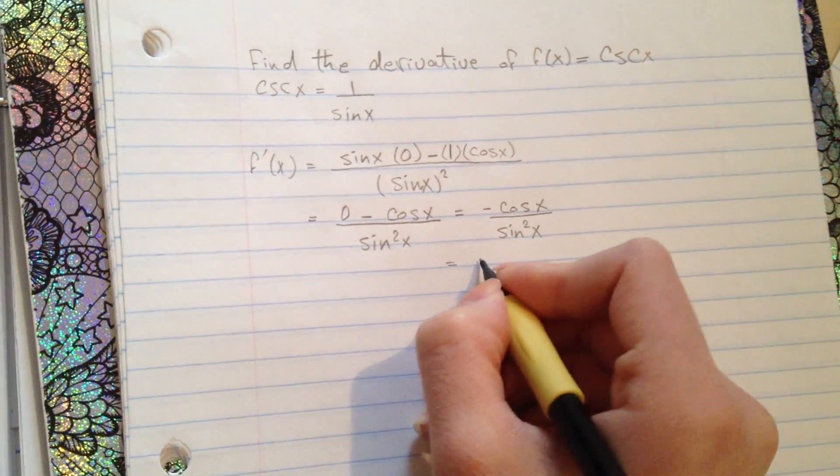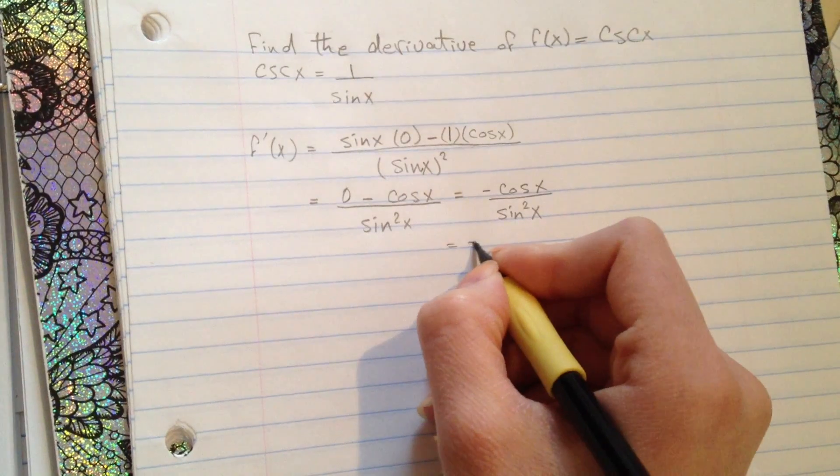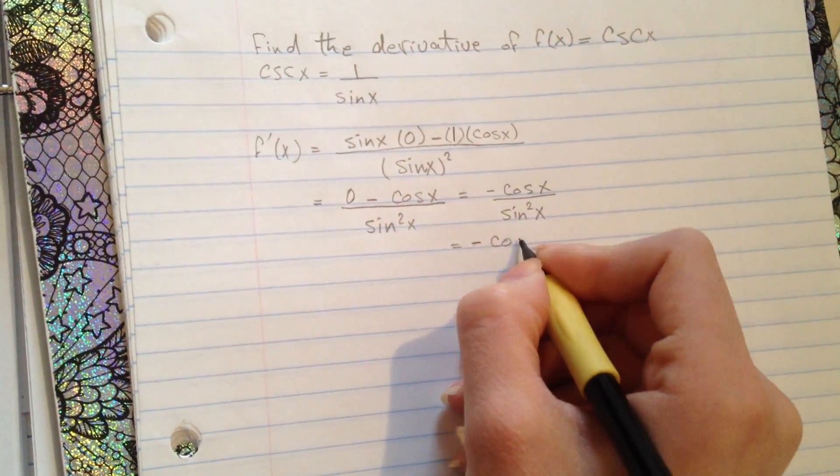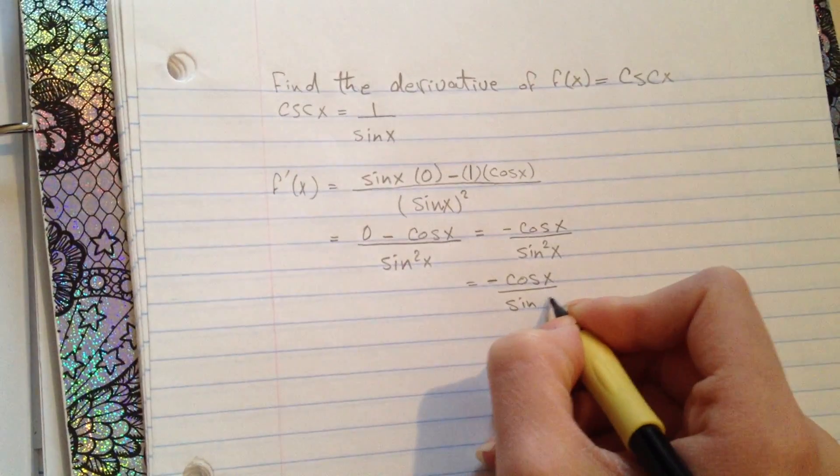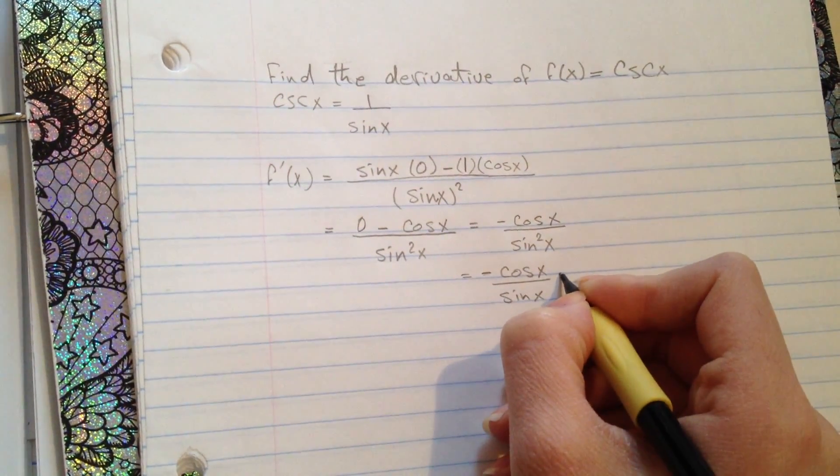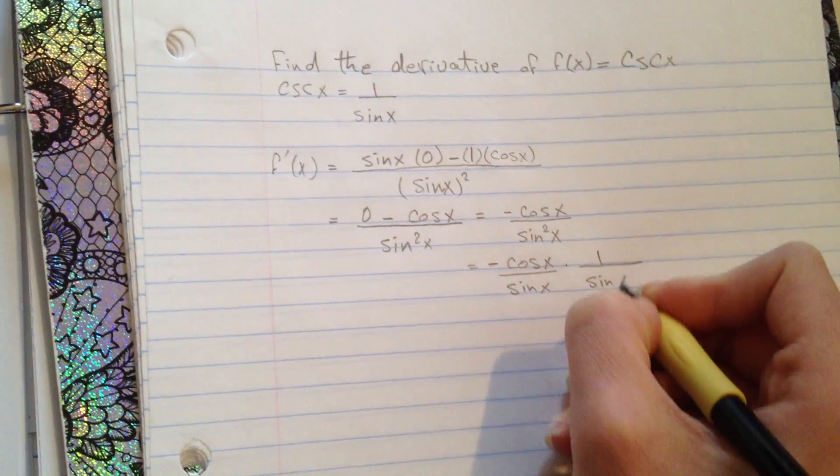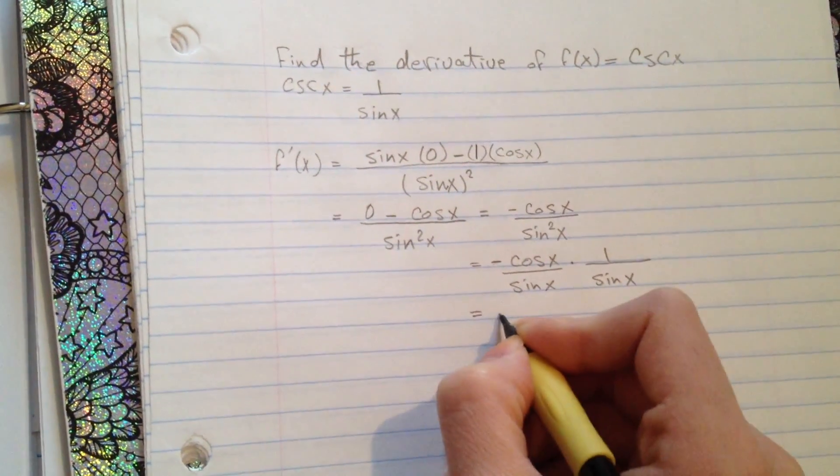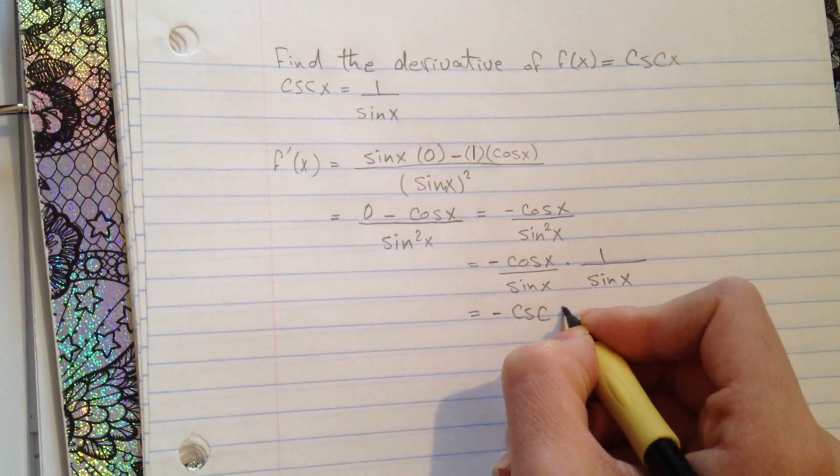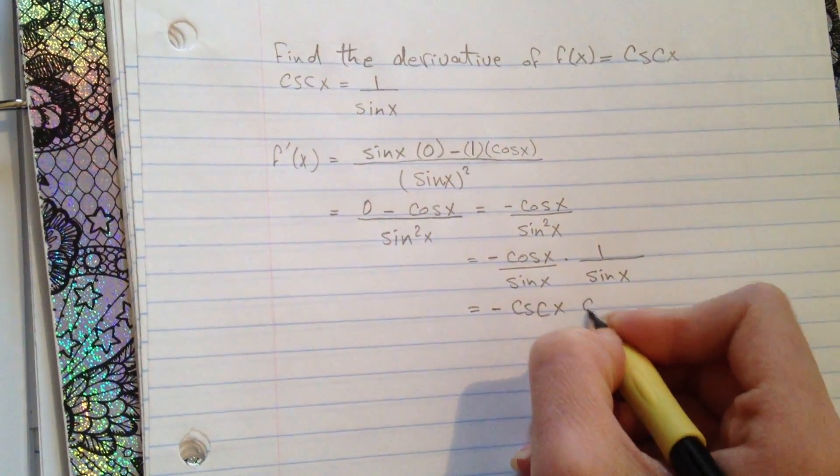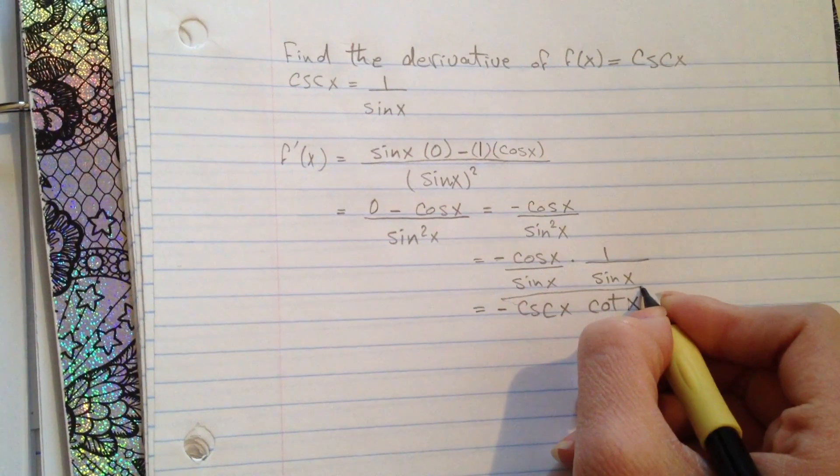Now we have -cos(x)/sin(x) and 1/sin(x), which gives us -csc(x)cot(x). Here's our answer.